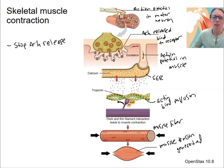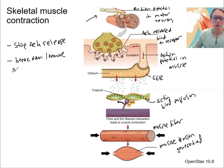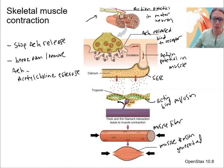We can stop the nerve from firing, which inhibits the neuron — we'll see this when we get into brain communication. We also want to break down the acetylcholine that's in the neuromuscular junction to remove it. This is done by an enzyme called acetylcholinesterase (AChE), which breaks down acetylcholine so it's no longer present and can't cause the muscle to generate an action potential or release more calcium.